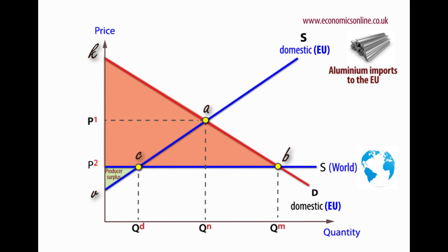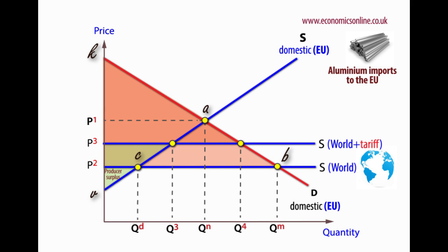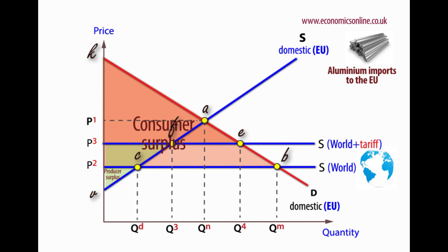Pressure might be put on the government to impose a tariff to protect domestic producers. The effect is to push up the world supply curve by the amount of the tariff.